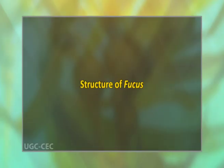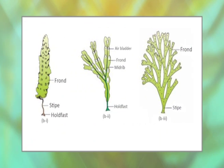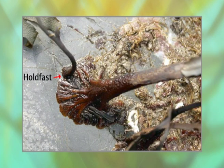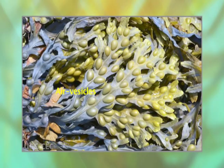Coming to the structure of Fucus: the plant body is leathery, parenchymatous, dichotomously or subpinnately branched, ribbon-like frond with a distinct midrib. The thallus is perennial with an irregular or disc-shaped holdfast by which it is attached to the substratum. The plants may be attached to completely or partly submerged rocks. Gas-filled air vesicles are present in pairs in some species, one on either side of the midrib.